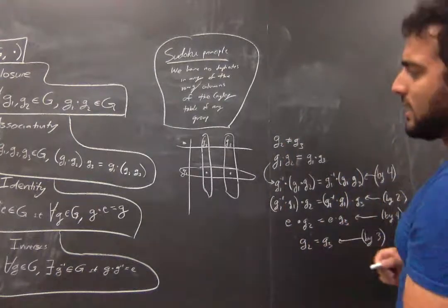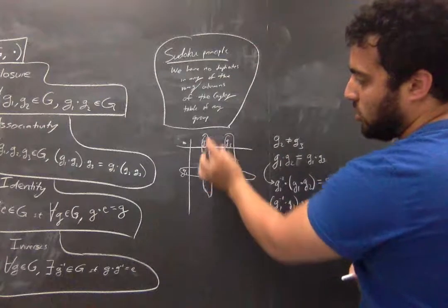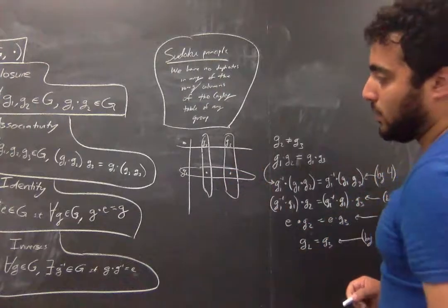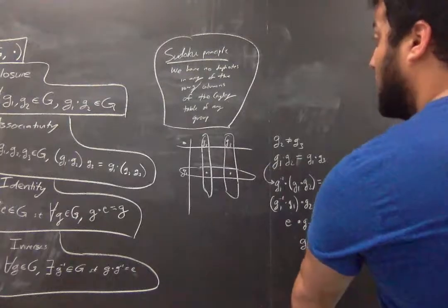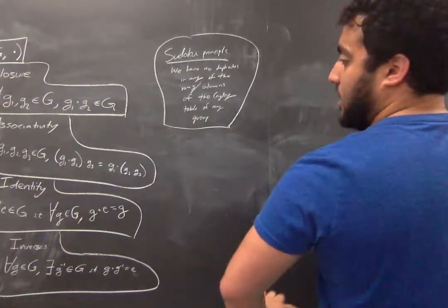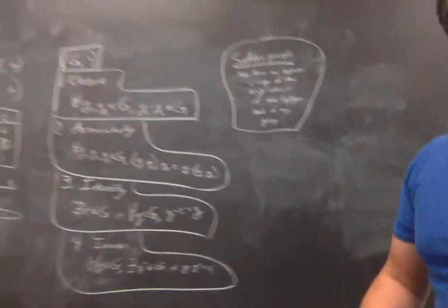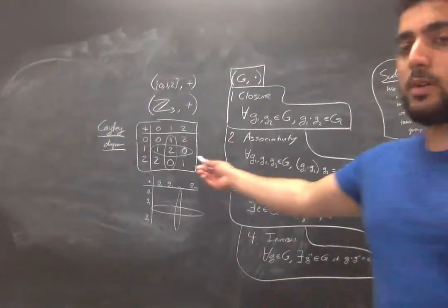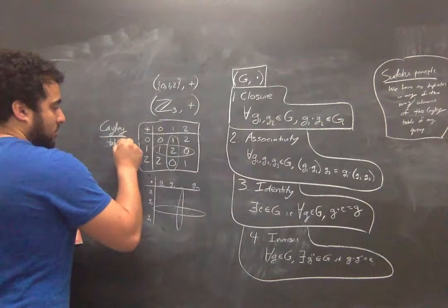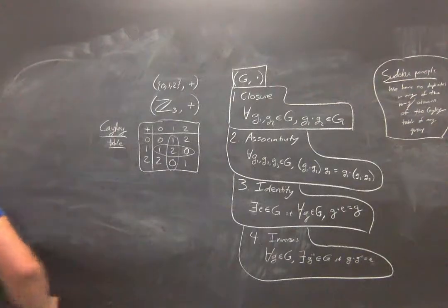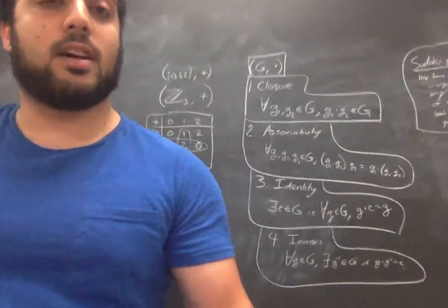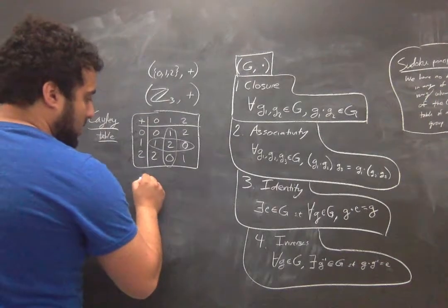Like I said, this is only half of the proof — technically we'd also want to show it for the columns, which would be: choose one column, choose two elements on the left, and prove you can't have duplicates. The proof would proceed very similarly. So let me just do one quick application of the Sudoku Principle. Let's look back at integers mod 3 — I'll redo the Cayley table here. I accidentally wrote 'Cayley diagram,' which is a different thing.